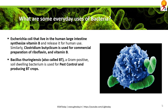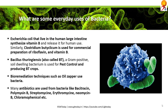Bacillus thuringiensis, also called Bt, a gram-positive soil-dwelling bacteria, is used for pest control and producing Bt crops. Bioremediation techniques such as Oil Zapper also use bacteria. Many antibiotics are derived from bacteria, such as bacitracin, polymyxin B, streptomycin, erythromycin, neomycin B, and chloramphenicol.